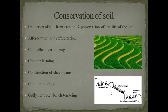And gully control and bench terracing — on slope areas we cut the slope and make terraces so that water falling there sinks into the earth rather than flowing away. These are all similar techniques with different names. The three main exam questions are: what are the causes of soil erosion, what are the effects of soil erosion, and how to conserve soil. Note that if the question asks why we should conserve soil, write the effects of soil erosion — not the conservation methods. We have to protect the soil and its fertility. Let us preserve our forests and soil.